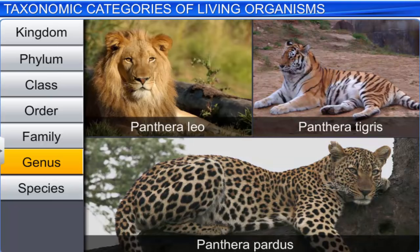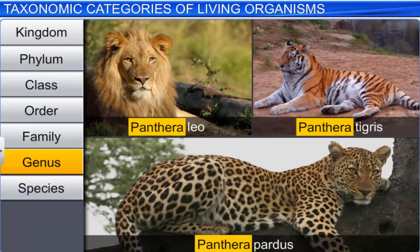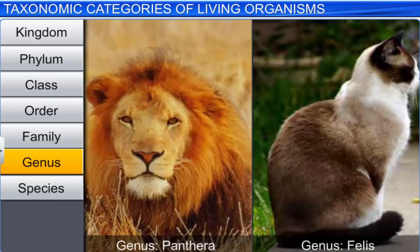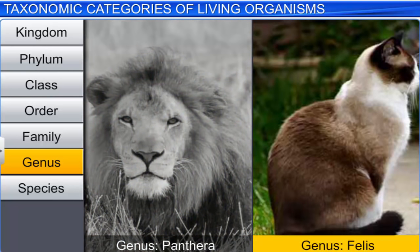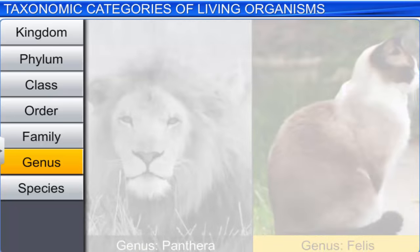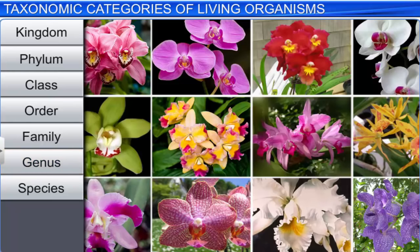Among animals, the lion, the tiger, and the leopard are closely linked, and thus are in the genus Panthera. However, the genus Panthera differs slightly from another genus, Felis, which includes cats. The next rank or category is family, which consists of a group of related genera with fewer similarities as compared to genus and species. For example, orange, lemon, and grapefruit belong to the family Rutaceae, or the citrus family.